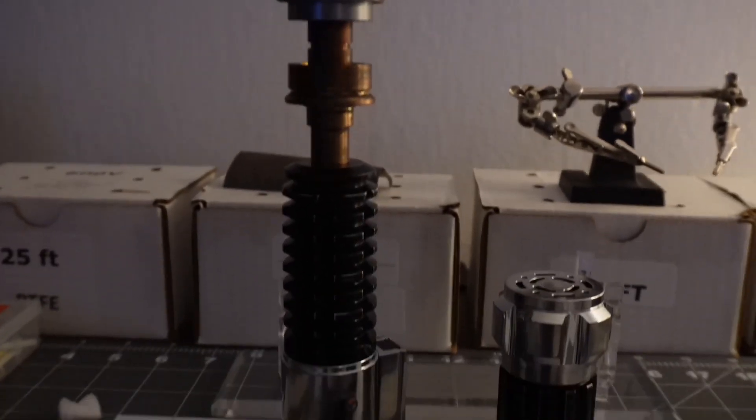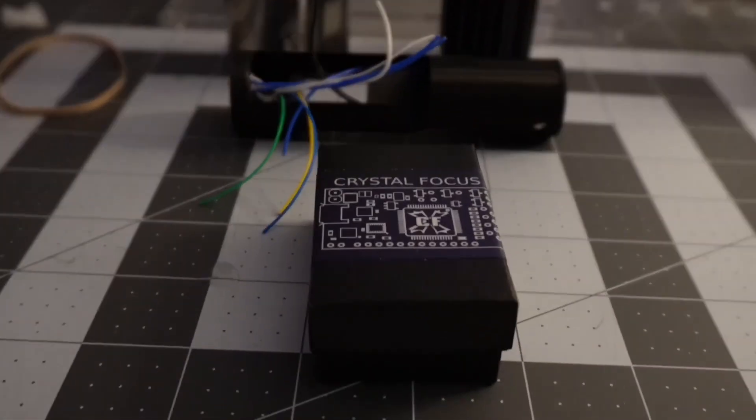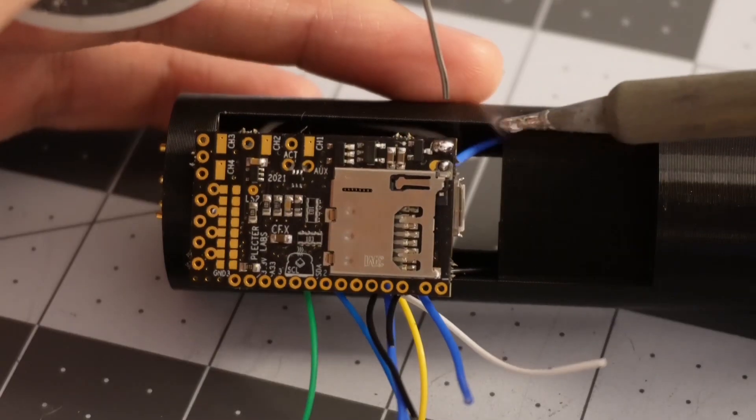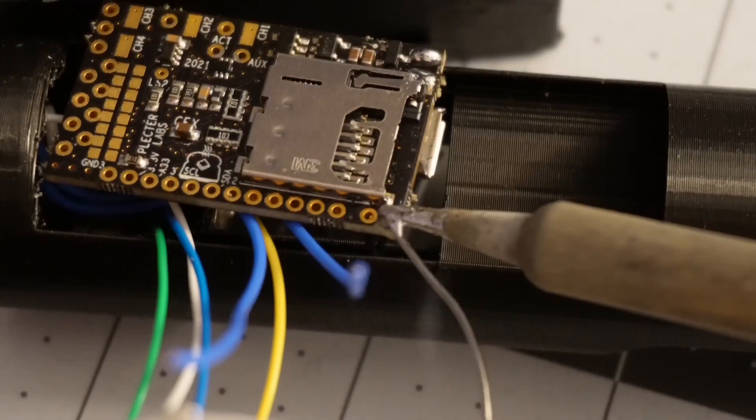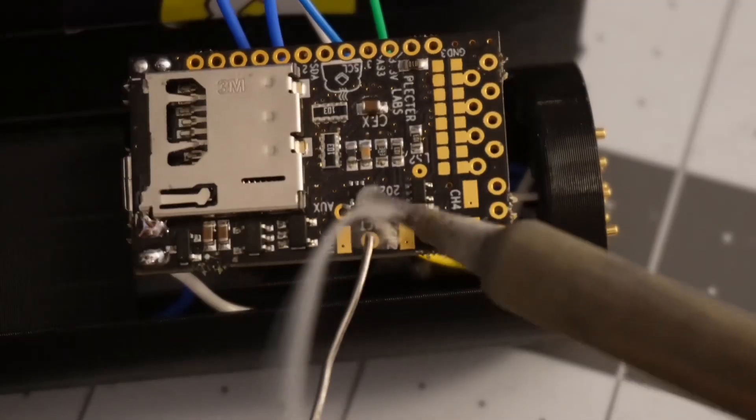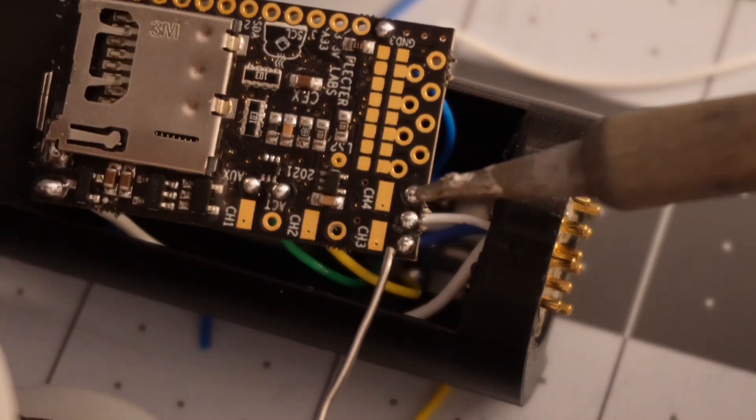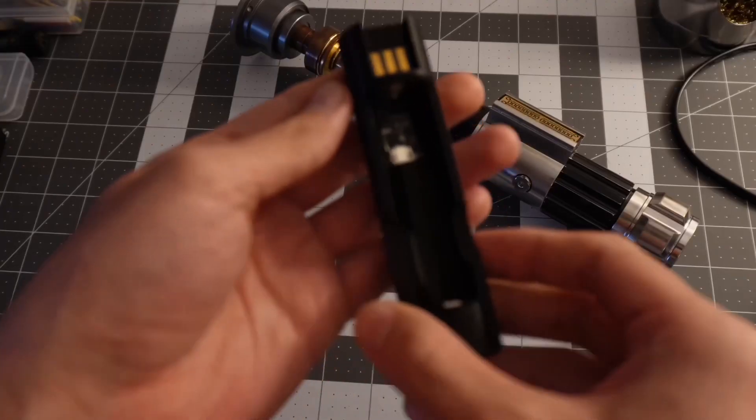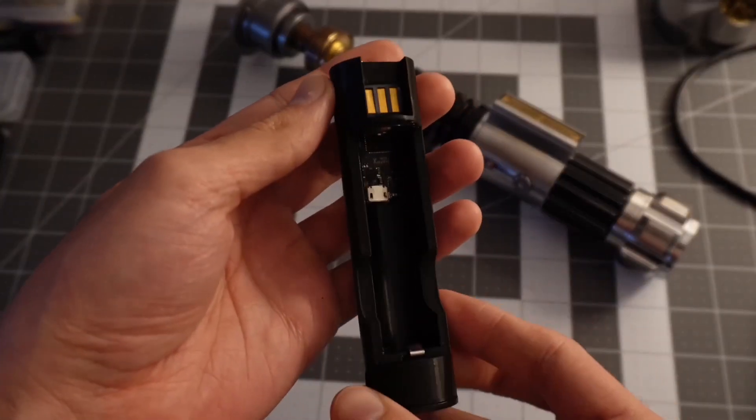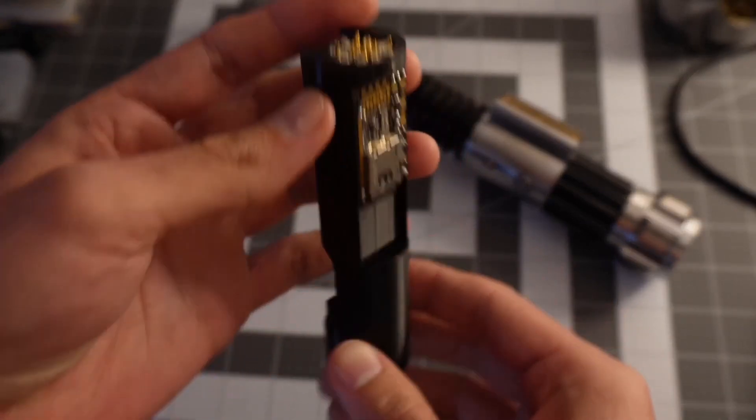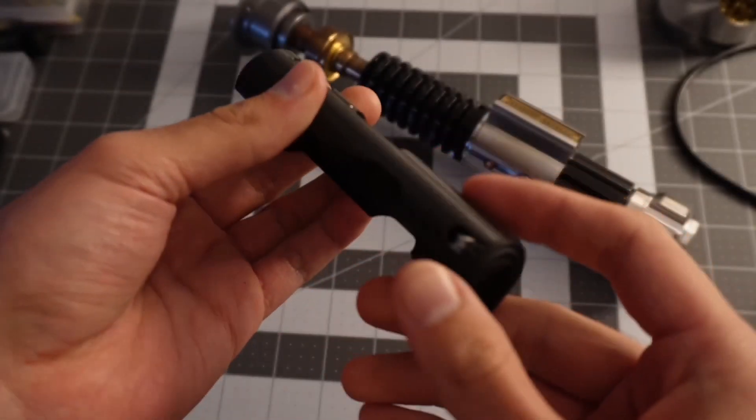This lightsaber project is nearly completed now. The last step is to install this crystal focus soundboard, and then we can test to see if it all works. And with that, everything in this lightsaber is connected. Let's take a look at how the chassis turned out. I gotta say, this turned out pretty clean. You can't even really see any wires.